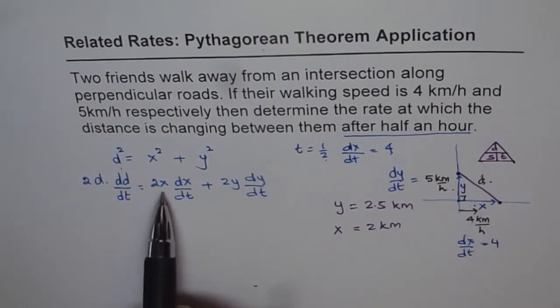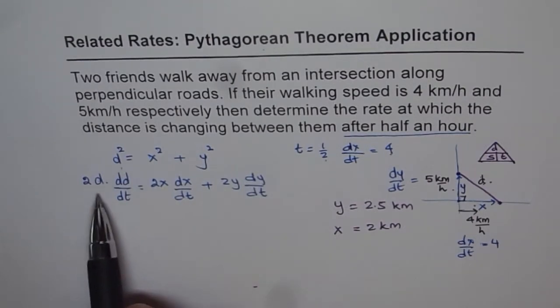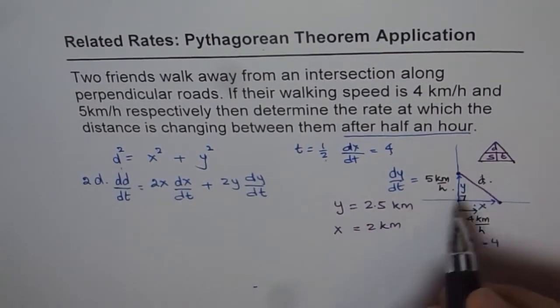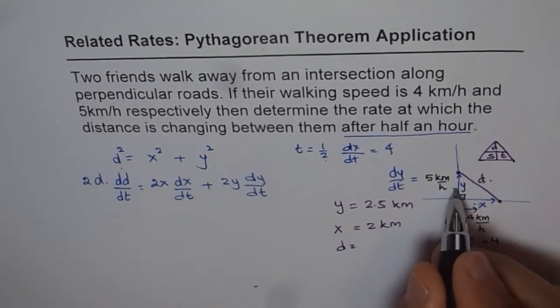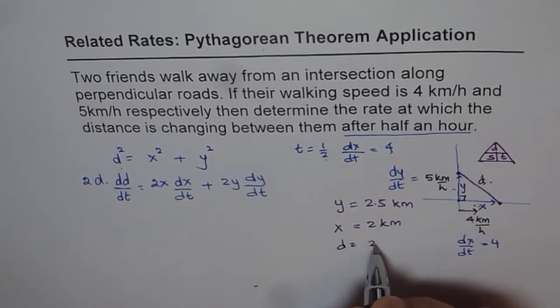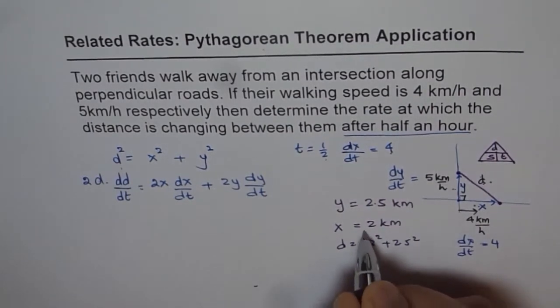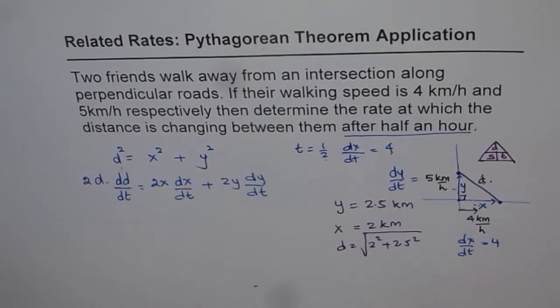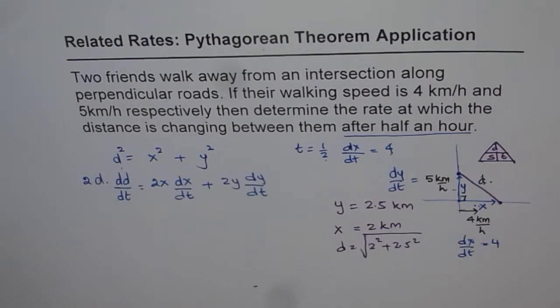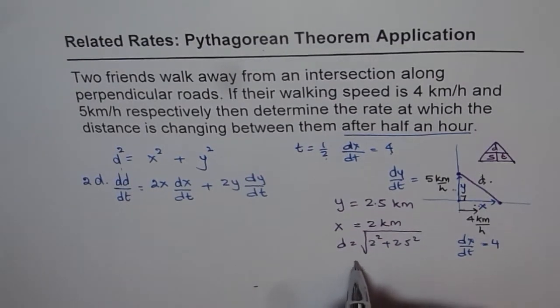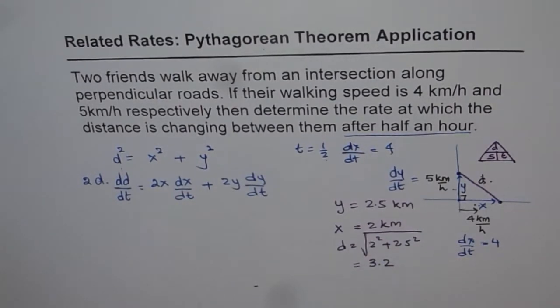So now in this equation, we know x, y, dy/dt, dx/dt. We need to find d. So d is what? D equals to square root of x squared plus y squared. So it is square root of 2 squared plus 2.5 squared. So you can use your calculator at this stage and do square root of 2 squared plus 2.5 squared, and you get square root of 41 over 2, which we can get in decimals as d equals to 3.2. So that is the value of d for us.